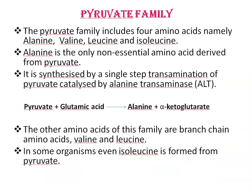Next is the pyruvate family. The pyruvate family includes four amino acids: alanine, valine, leucine, and isoleucine. Alanine is the only non-essential amino acid derived from pyruvate, and alanine is synthesized by a single-step transamination of pyruvate, catalyzed by an enzyme, alanine transaminase (ALT). Here, pyruvate reacts with glutamic acid, and alanine plus alpha-ketoglutarate is formed.